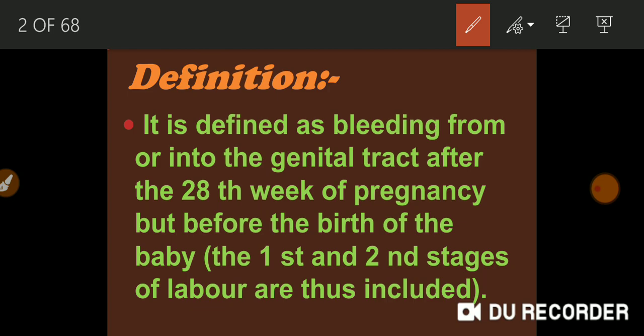It is defined as bleeding from or into the genital tract after the 28 weeks of pregnancy but before the birth of the baby. The first and second stage of labour are thus included. Now there is a slight difference between early pregnancy bleeding — I said bleeding in early pregnancy — now this is also a bleeding.